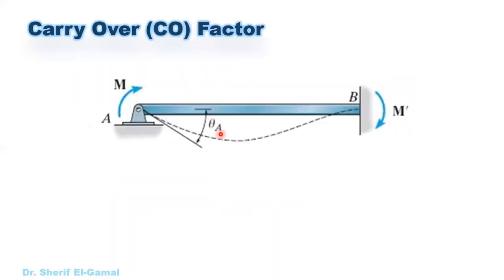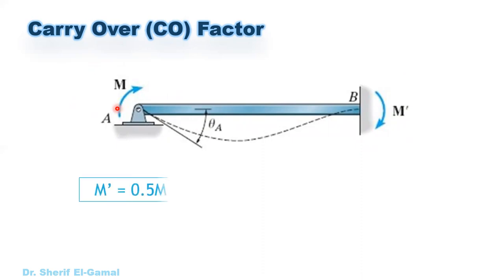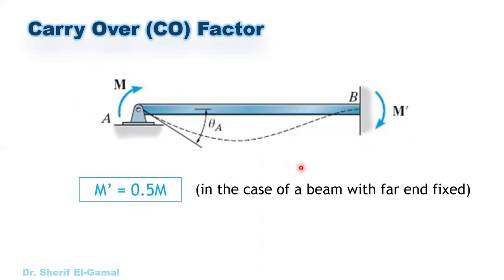The carry over factor describes how a moment applied at one end results in a moment at the far end. If the far end is fixed, M_far = 0.5 × M_applied, so the carry over factor is 0.5. The carry over moment has the same sign as the original moment. If the far end is a pin or roller support, the carry over factor equals zero — no moment is carried over.